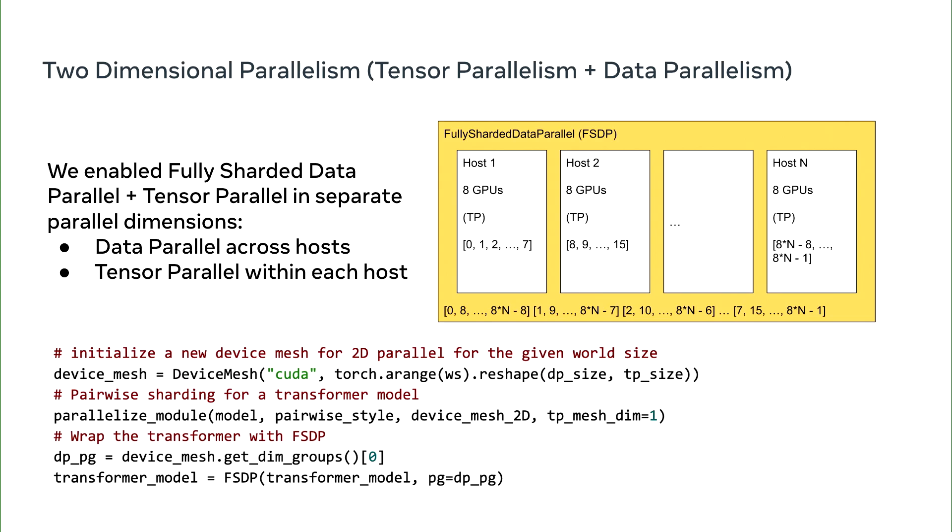Next, I want to talk about 2D parallelism, where we combine data parallel and tensor parallel together. The way it works is that we first partition each model parameter across all GPUs on each host, and then the fully sharded data parallel, which is also called FSDP, will reshard the local tensor of tensor parallelism. This way, we can get the benefits of both tensor parallel and data parallel.